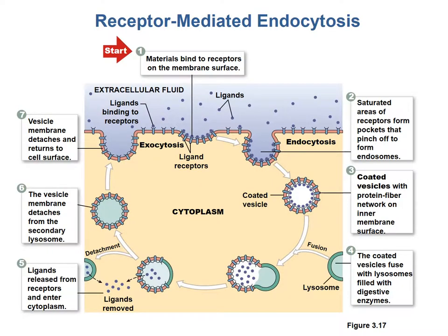We've been talking about membrane transport using carrier proteins or channel proteins embedded in the membrane. But in some cases, materials are too large to fit through those protein channels, so we need another way to move them — called bulk transport. There are two major types: exocytosis and endocytosis. Endocytosis is bringing things into the cell; exocytosis is pushing things out. Exocytosis is the last step of letting things go from the cell — you can think of the cell vomiting or defecating to spit material out.